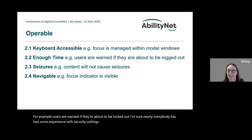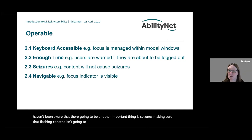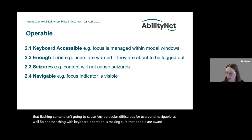Another important Operable requirement is enough time — for example, users should be warned if they're about to be logged out. Most people have experienced being logged out unexpectedly due to security settings. There's also the requirement around seizures — making sure that flashing content isn't going to cause difficulties for users. And navigable: making sure people are aware of where they have keyboard focus and can move around the page.